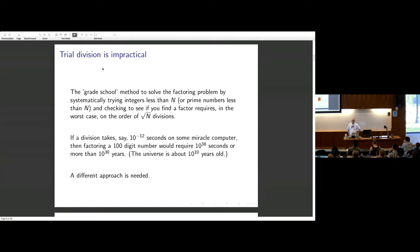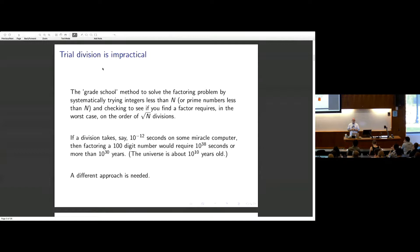But if you think about this algorithm — we routinely talk about 50, 80, 100-digit numbers. If you think about a 100-digit number, that's 10 to the 100th. If you can do 10 to the 12th divisions per second on some computer, then to do a 100-digit number would take 10 to the 38th seconds, which is about 10 to the 30th years — many, many orders of magnitude greater than the age of the universe. So to reach numbers of any respectable size, you need a different approach.